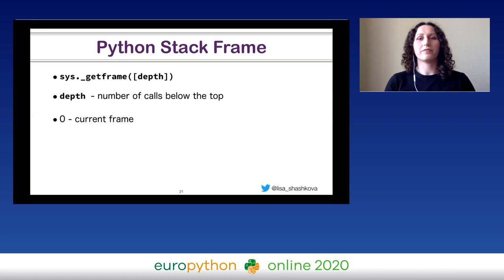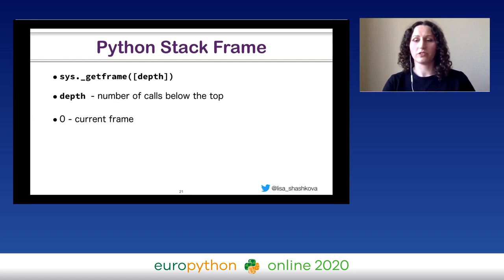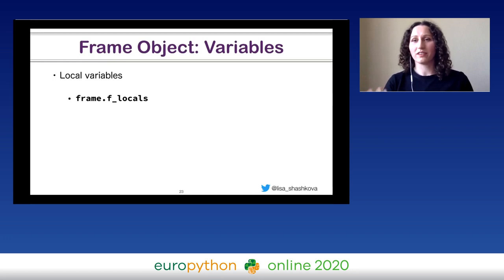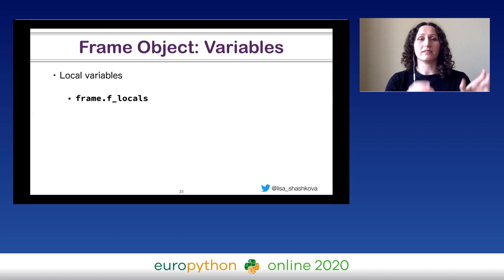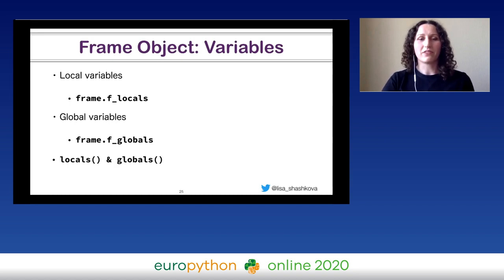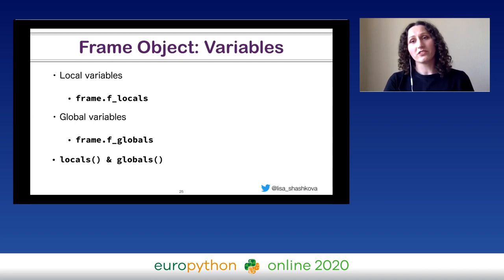You can get a Python frame object with the built-in function sys._getframe(). It takes an argument depth, which returns the number of calls below the top. So if you want to get the current frame, you should pass zero to this function. When you get this frame object, you can inspect what interesting data is stored inside it. First of all, a frame object contains a dictionary of local variables, where keys are their names stored as strings and values are variable objects. In addition, a frame contains information about global variables — global meaning global for the current module. We don't need the frame just to get these dictionaries, because there are built-in functions locals() and globals() which return exactly the same dictionaries.